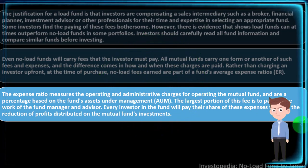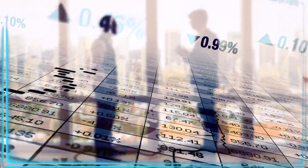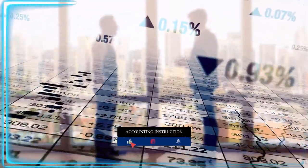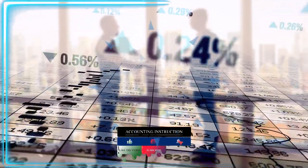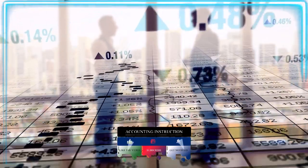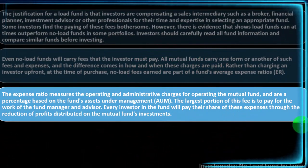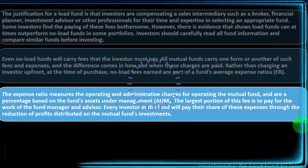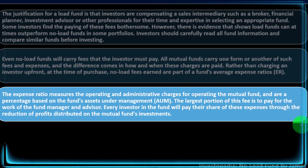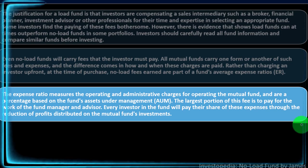You might give a fund manager more leeway to invest in different things and try to outperform the market, or less leeway by investing in funds geared towards specific market segments, or even tie the fund to an index — an average of the market. Each tier has fewer fees, but there will still be some fees to manage the fund. The large portion of this fee pays for the work of the fund manager and advisor, with every investor sharing these expenses through reduced profits distributed from the fund's investments.